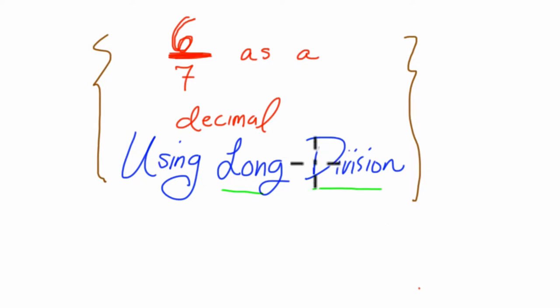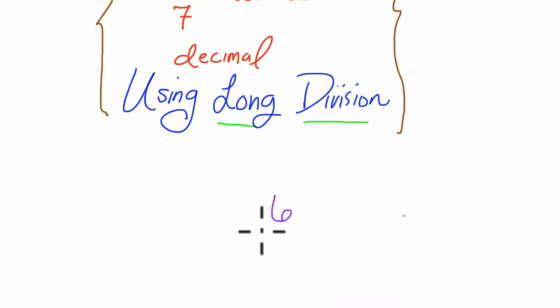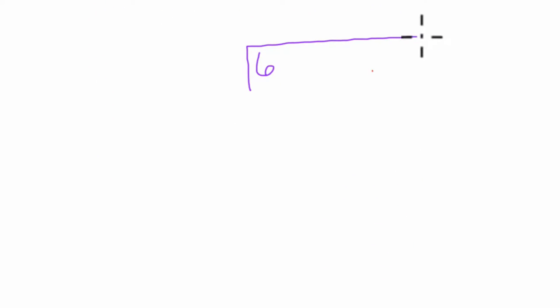All right, so here we are converting six-sevenths into a decimal using long division. That's a way of saying, take your numerator, six, and divide that by the denominator, seven.